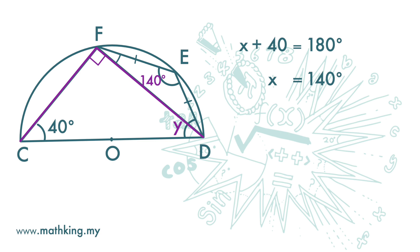How about this angle here? We can make use of this triangle to find this angle. Triangle DEF is an isosceles triangle, so these two angles are the same. So this angle is 180 degrees minus 140 divided by 2. The answer is 20 degrees.